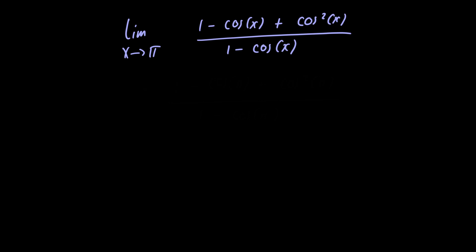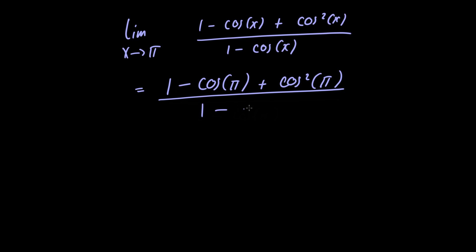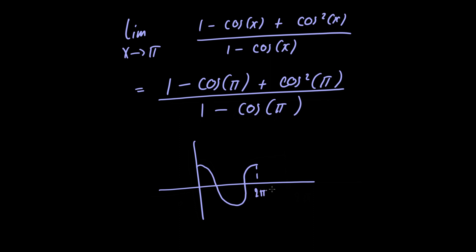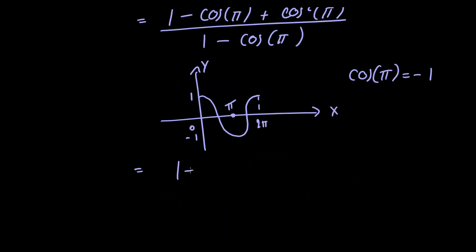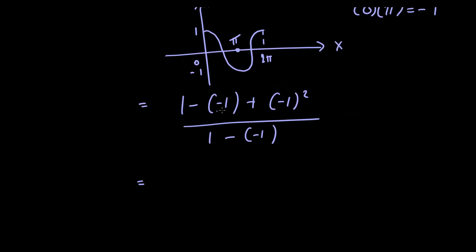At this point we can just go ahead and let x equal pi. We're left with 1 minus cosine of x plus cosine squared of x divided by 1 minus cosine of x. If we draw the graph of cosine from 0 to 2 pi, it's very clear that cosine of pi is equal to minus 1. So we have 1 minus minus 1 plus minus 1 squared, divided by 1 minus minus 1. That gives us 2 plus 1 over 2, so the final answer is 3 over 2.